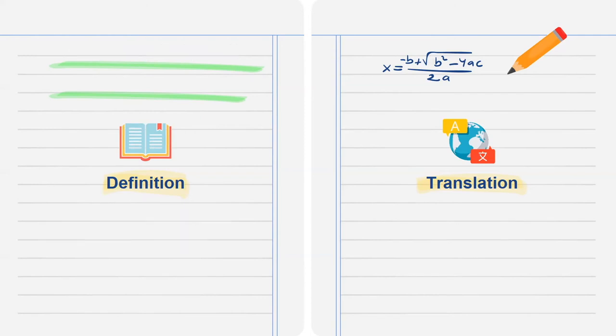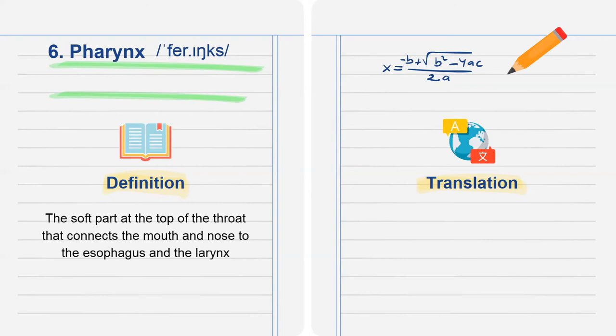The sixth word is pharynx. The soft part at the top of the throat that connects the mouth and nose to the esophagus and the larynx. Translation: họng.